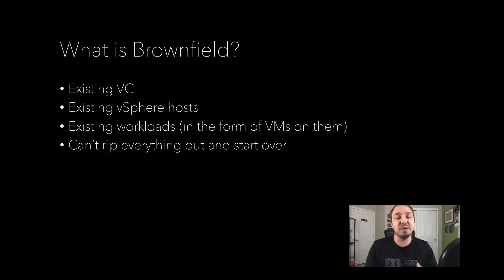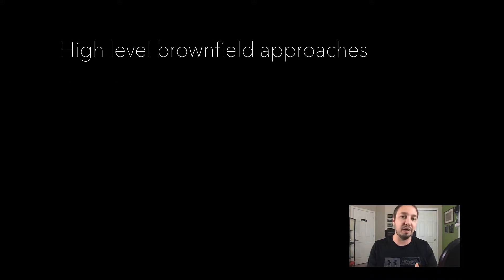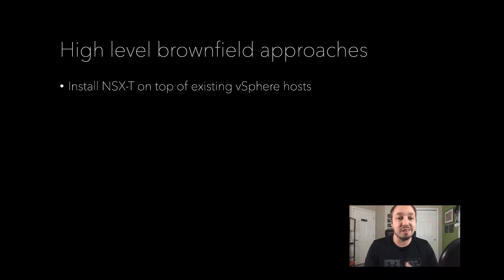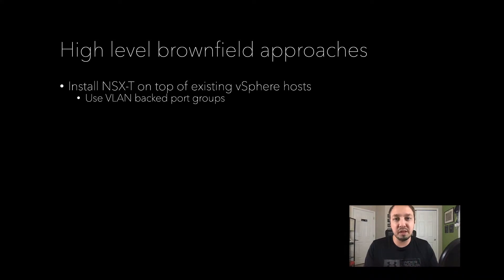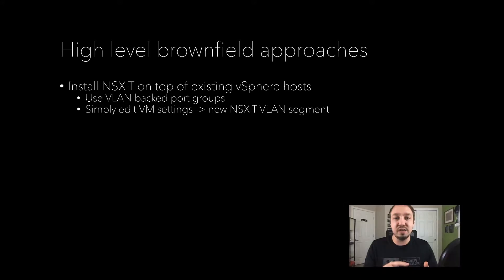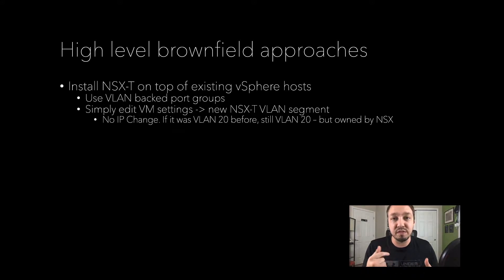The good thing about NSX-T is that you can absolutely do Brownfield deployment and it actually works out pretty well. The first approach is we just install NSX-T on top of the existing vSphere host. If we do this, we would use what's called a VLAN-backed port group - basically just a port group, like if you're familiar with the VDS or a VSS, but NSX happens to own it. If we want to put workloads on that new segment, all we have to do is edit the VM settings and put the VM on the new NSX-T segment. If you were on VLAN 20 before, you're still on VLAN 20 now - the only difference is that NSX will actually own that port group.